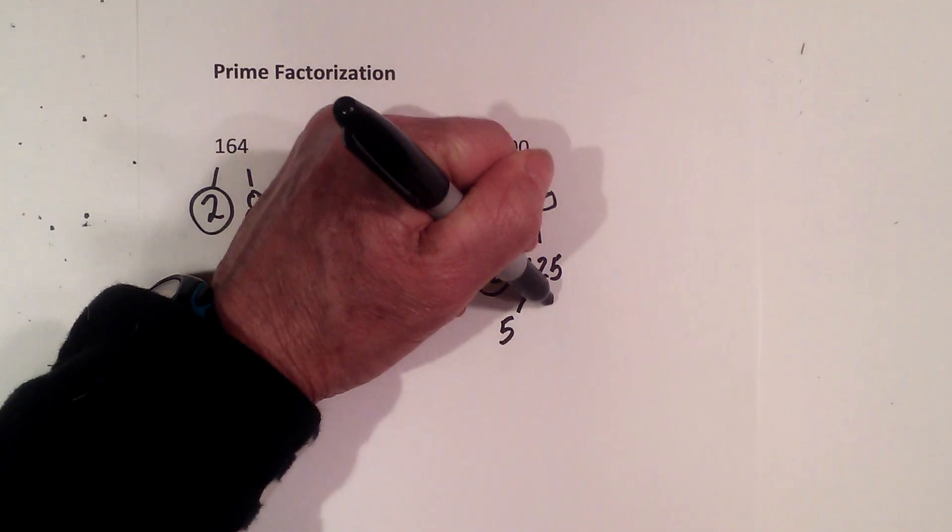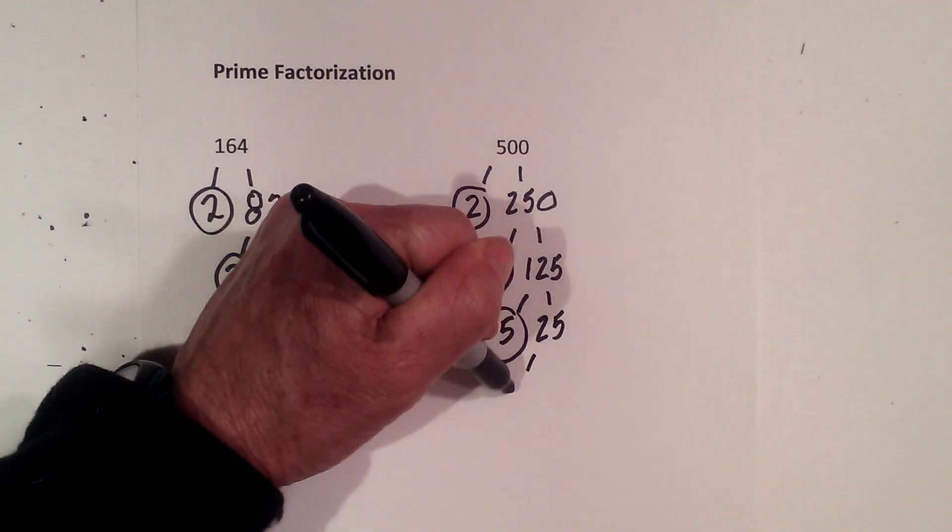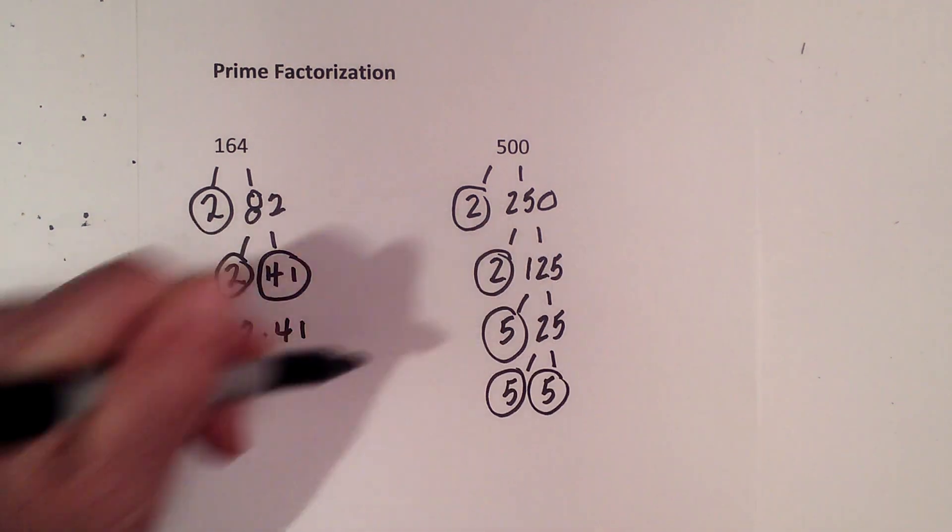Now, 5 times 25. Circle the 5 because it is prime. And finally, 5 times 5. Circle both 5's because they are prime.